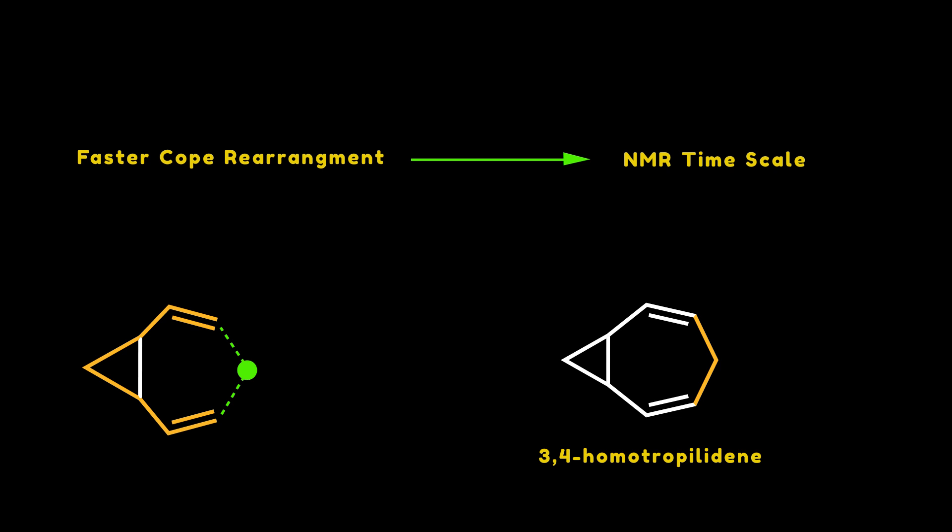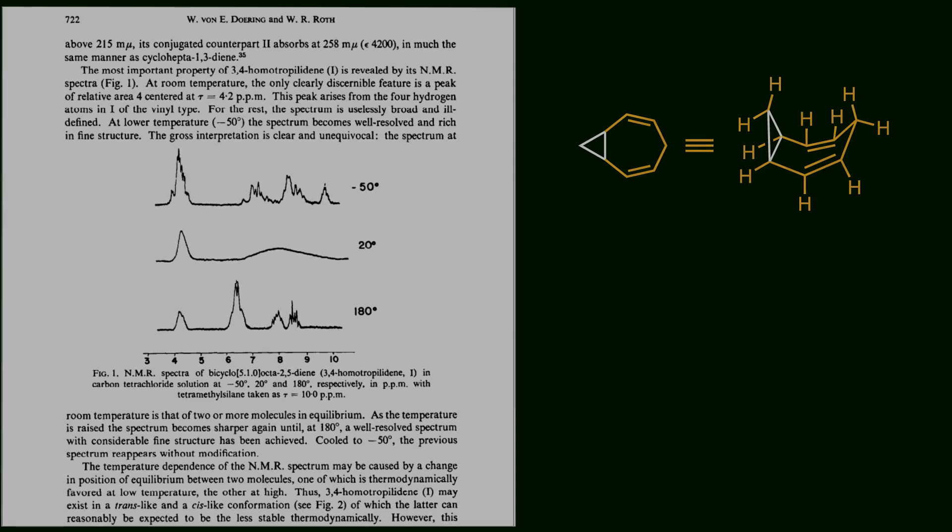They proposed that this criterion could be achieved if the Cope rearrangement occurs in a ring. 3,4-Homotropylidene is a larger ring system that incorporates the cis-1,2-divinylcyclopropene unit, making it suitable for such studies.